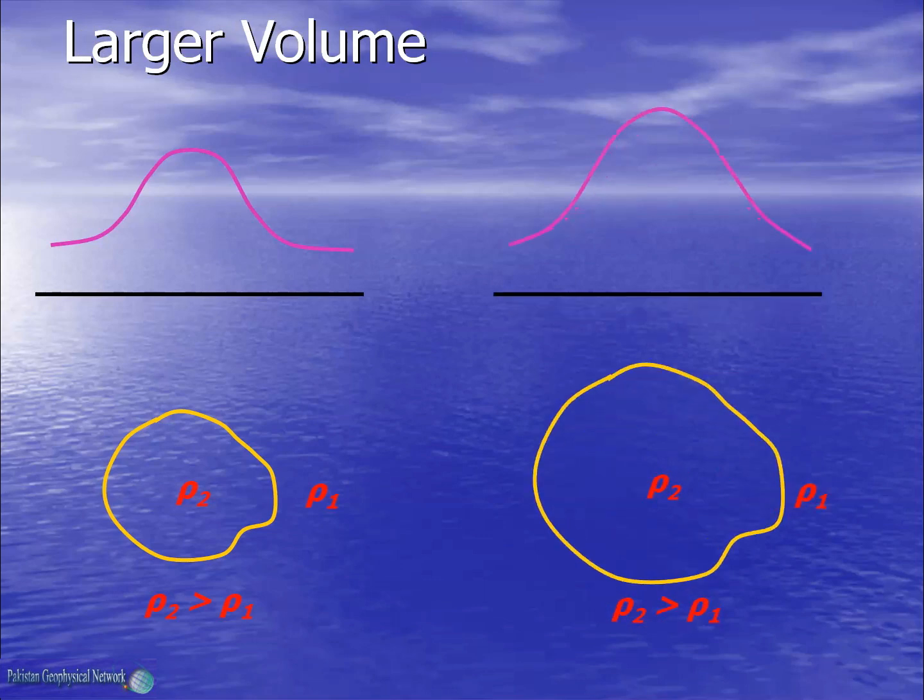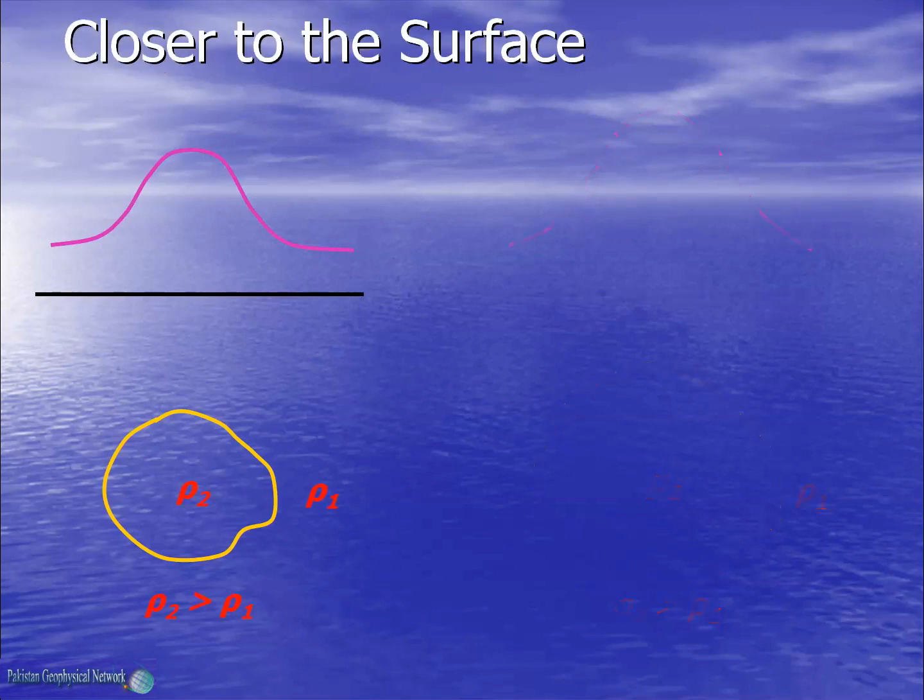Similarly, if the size of the subsurface body is larger, we would see that the signature of the anomaly would also be enhanced. And finally, if the body is closer to the surface, again, the anomaly would increase.